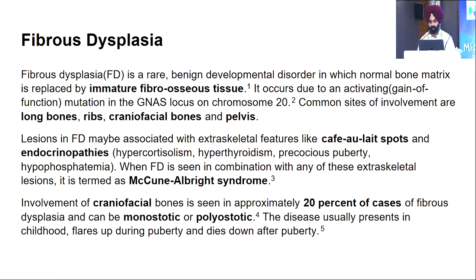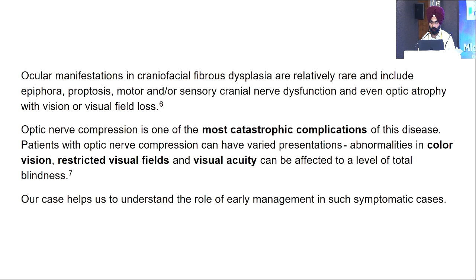Fibrous dysplasia is a disease where normal bone is replaced by immature fibro-osseous tissue, which is softer and weaker than normal bone. It usually affects the long bones, ribs, craniofacial bones, and pelvis. When accompanied by endocrinopathies and café-au-lait spots, it is called McCune-Albright syndrome. Craniofacial involvement is seen in 20% of cases and may be monostotic or polyostotic. The most catastrophic complication is optic nerve compression, and the patient can present with diminished color vision, restricted visual fields, and reduced visual acuity.